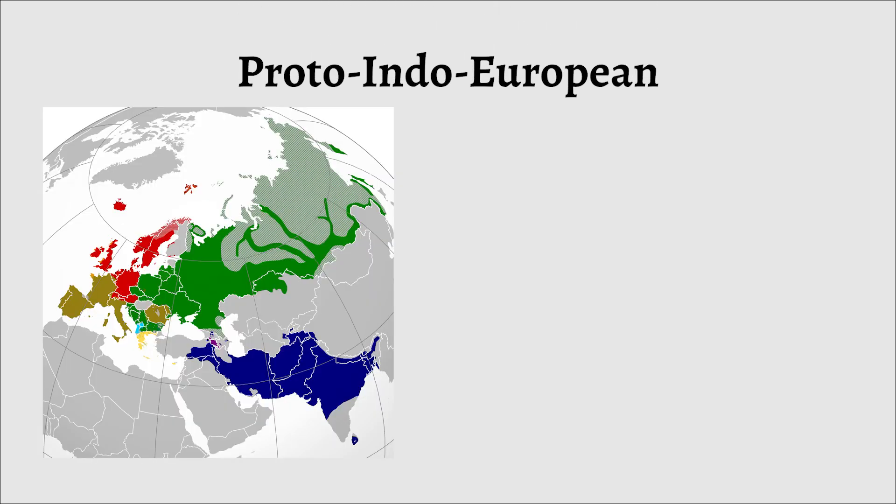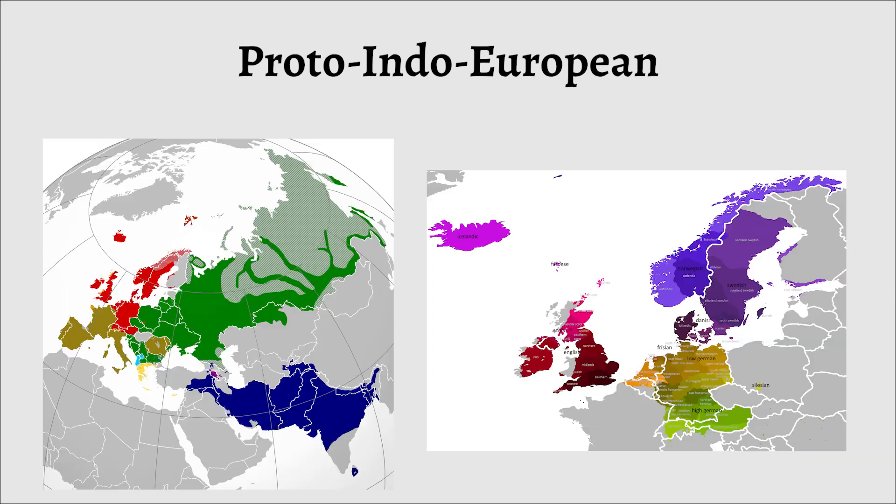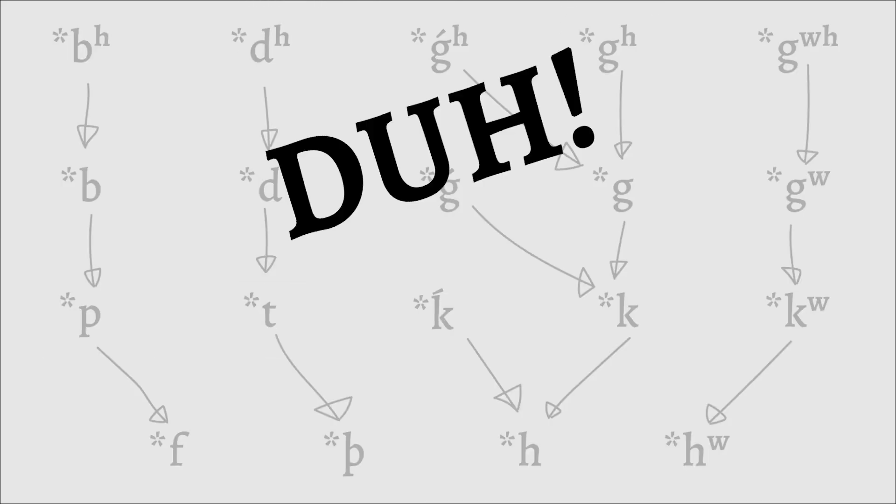Now if you already know a bit about Proto-Indo-European and some basics of how it changed when becoming Proto-Germanic, the ancestor language of English, you might be saying something like, it's obviously a holdover from Grimm's Law, duh, in which case I'd say, yeah, partly, but it's actually a bit more complicated than just that.